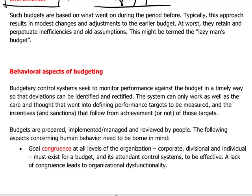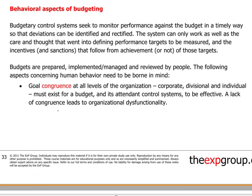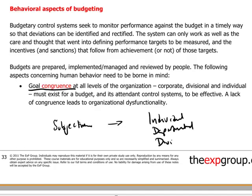It's important to appreciate that budgetary systems are made and used by people, and therefore they're going to be influenced by certain behavioral traits, interests, and possibly prejudices or preconceived notions. To overcome the subjective element in budgeting and arrive at a common budget which serves the company's best interests, we speak of goal congruence — ensuring that individual, departmental, and divisional interests are all in line with the overall corporate interests and the interests of shareholders.